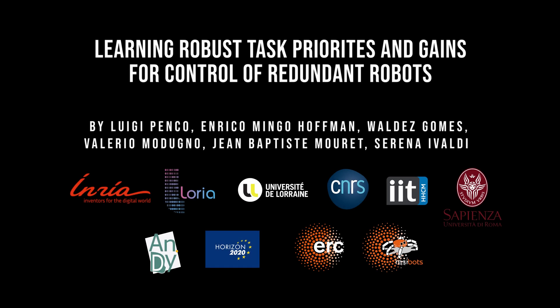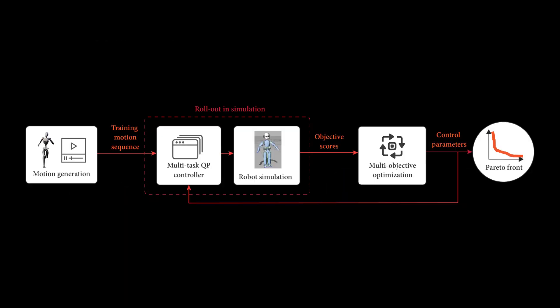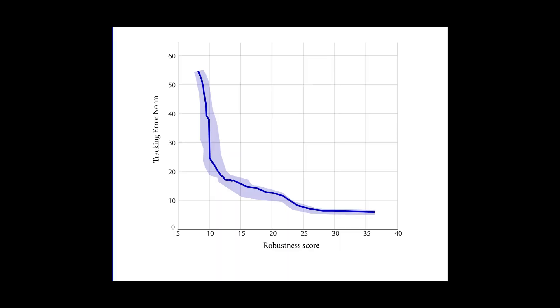This video refers to the experiment section of the work learning robust task priorities and gains for control of redundant robots. The solution of the algorithm is a Pareto front that represents the set of optimal trade-offs between performance and robustness. Robustness is encoded by the distance of the zero-moment point from the center of the support polygon, while performance is encoded by the tracking error.